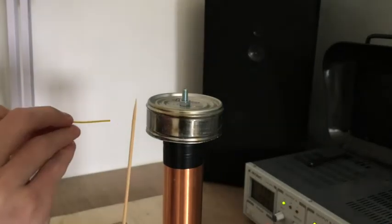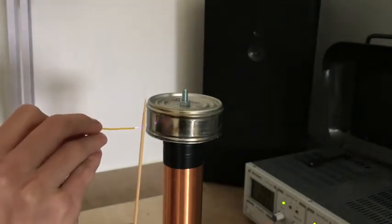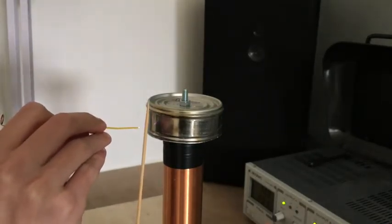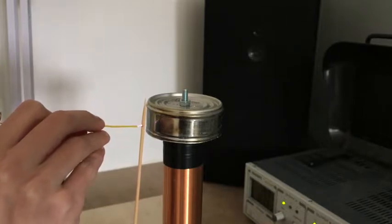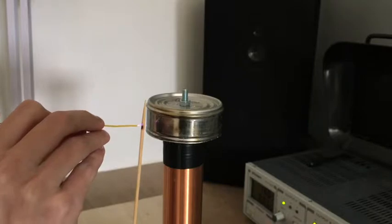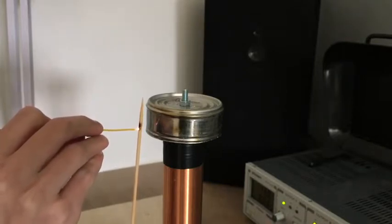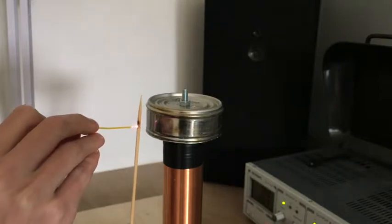We also tried the same process with a wooden stick and we got similar results. The wood took a little longer to set on fire but once it was burning it started arcing with the Tesla coil as well.